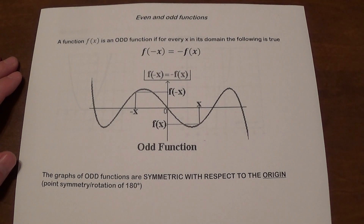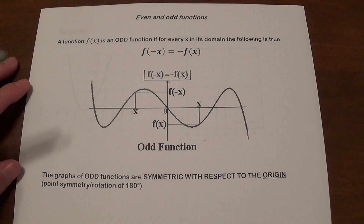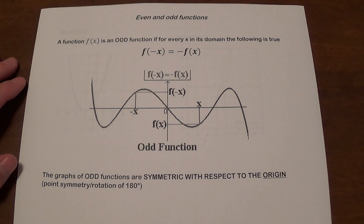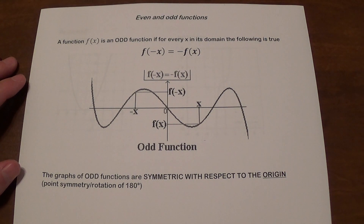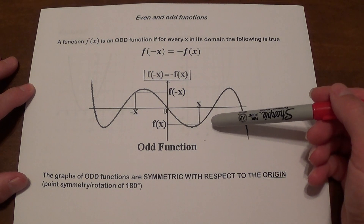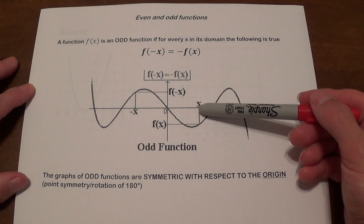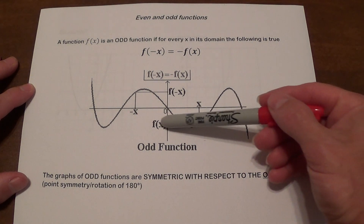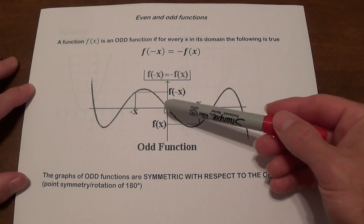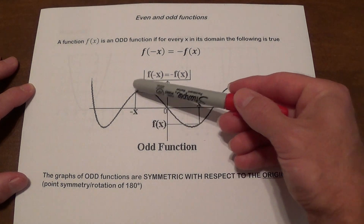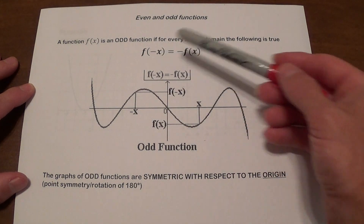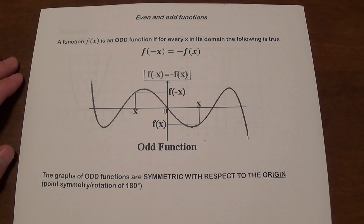A function is going to be odd if for every x in its domain this expression is true: f of negative x is going to be equal to the negative of f of x, which means the opposite of f of x. If you look at this graph, this is x, this is f of x. And if you take negative x, you're going to get the opposite value of y. This function is going to be odd.